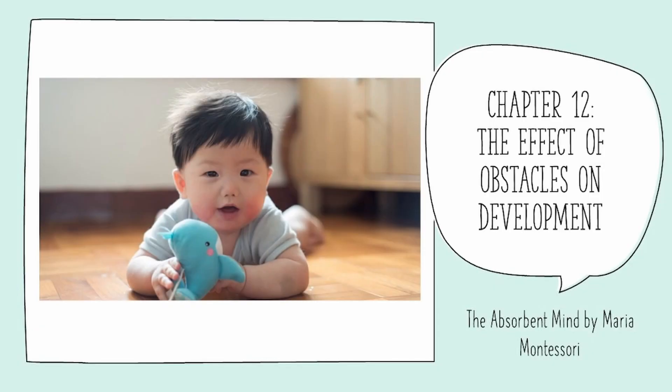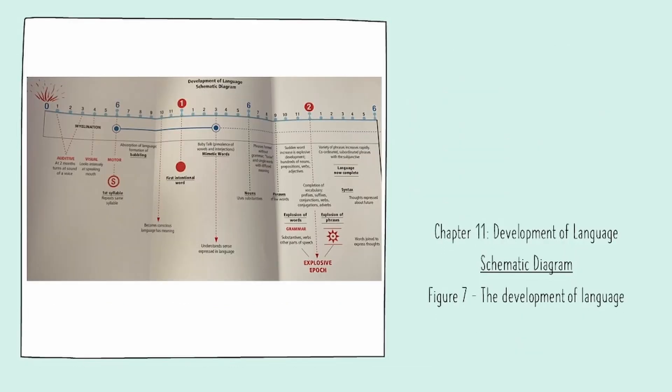Hey everyone, this is Teresa from Base 10 Montessori, and today we're going to go over Chapter 12 of The Absorbent Mind by Maria Montessori. Chapter 12 is called The Effect of Obstacles on Development.